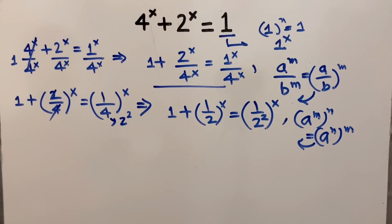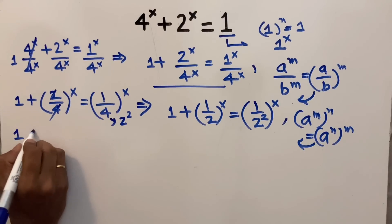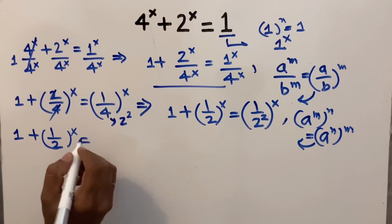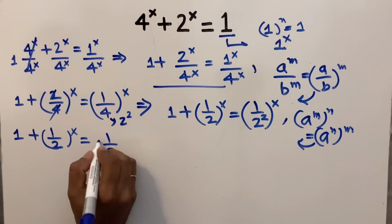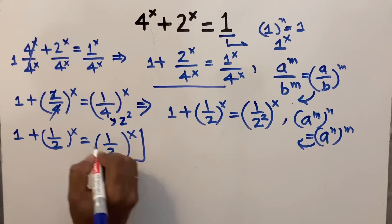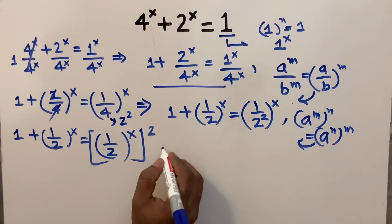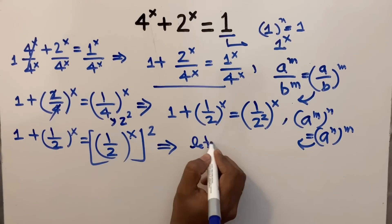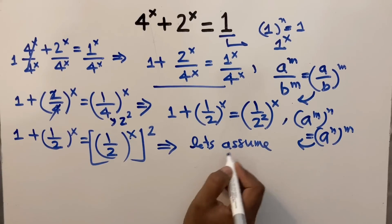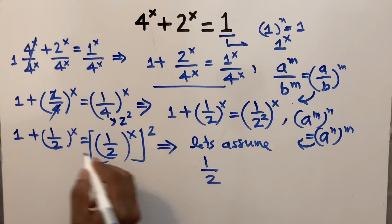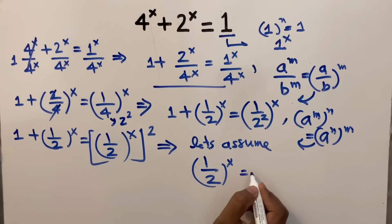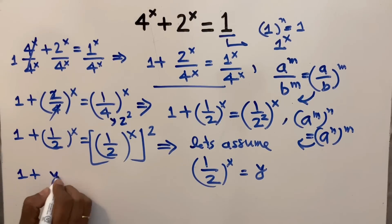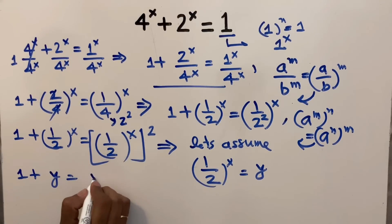By applying the exponential rule (a^m)^n = a^(mn), this equation becomes 1 plus (1/2)^x equals ((1/2)^x) squared. To simplify and solve this equation, let's assume (1/2)^x equals y. So the equation becomes 1 plus y equals y squared.